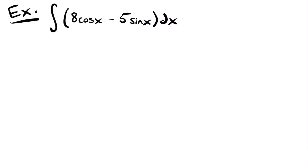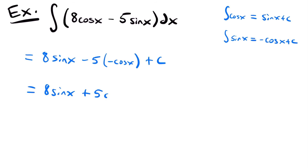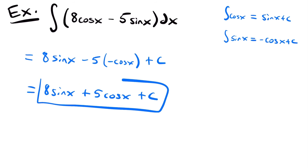Now we're going to start looking at some trig functions. We have the integral of 8 times cosine x minus 5 times sine x. We know the integral of cosine x is sine x plus c, and the integral of sine x is negative cosine x plus c. Multiplying our constants: 8 times sine x minus 5 times negative cosine x plus c. Simplified, this is 8 sine x plus 5 cosine x plus c — the final answer to that integral.